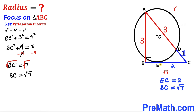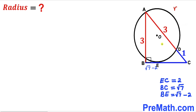Now let's make an observation. We know that segment EC is 2, so the tiny segment BE must be √7 − 2.